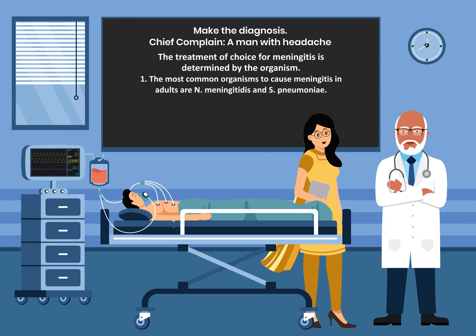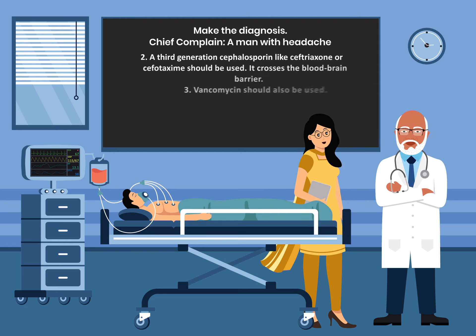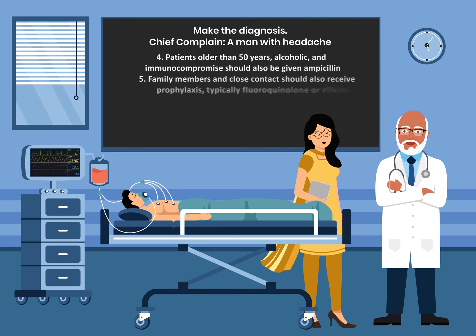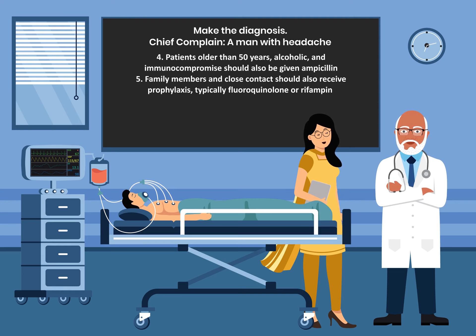The treatment of choice for meningitis is determined by the organism. The most common organisms in adults are Neisseria meningitidis and Strep pneumoniae. A third-generation cephalosporin like ceftriaxone or cefotaxime should be used, as it crosses the blood-brain barrier. Vancomycin should also be added. Patients older than 50, alcoholics, and immunocompromised patients should also receive ampicillin. Family members and close contacts should receive prophylaxis, typically with a fluoroquinolone or rifampin.